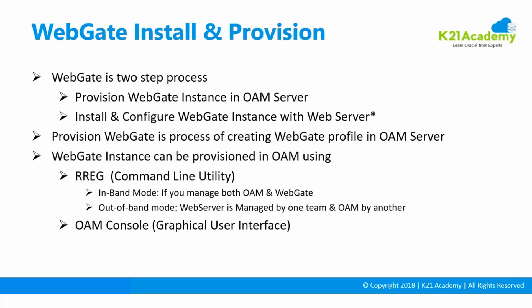However, if the web servers are managed by one team and OAM servers are managed by another team - which is quite common in big companies - then you use the out-of-band method. This means the web team creates a file for you, and you then run that file on the OAM server, generate the artifacts, and give that generated artifact back. You can also create the same thing using the OAM console.